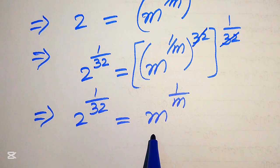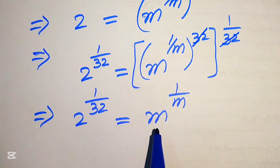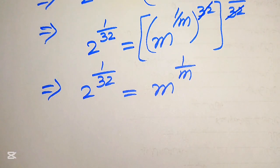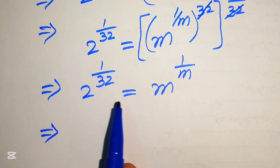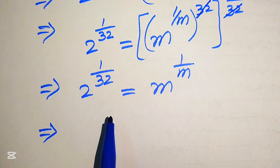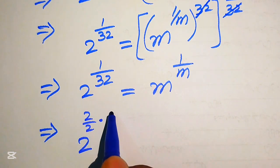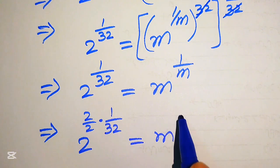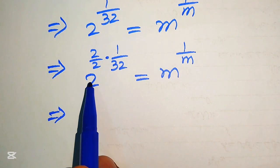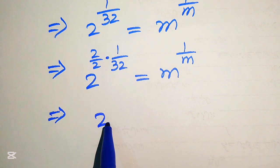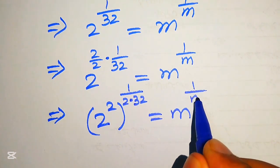If you focus on the right hand side, you see the exponent of this term is the reciprocal of its base. So we will make this same condition on the left hand side. To do that, we rewrite the left hand side by multiplying the exponent of 2 by 2 and also dividing by 2: 2 to the power of 2 over 2 multiplied by 1 over 32, equals to m to the power of 1 over m. Now we move this 2 inside the term and multiply 2 with 32, written as 2 squared, whole power 1 over 2 times 32, equals to m to the power of 1 over m.